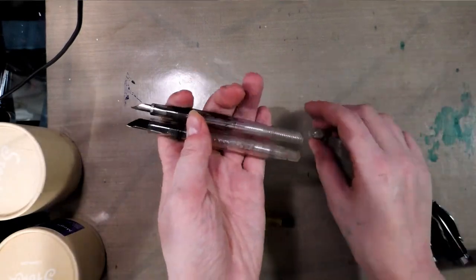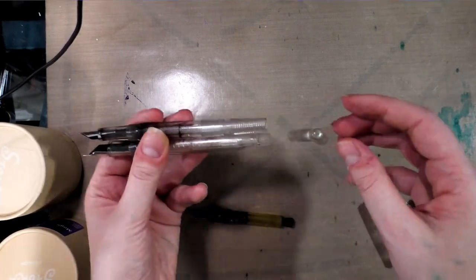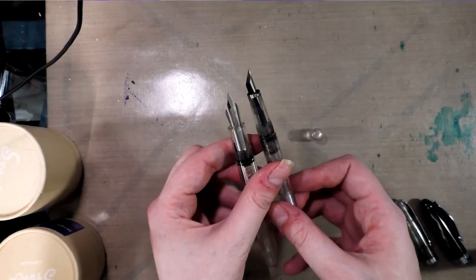As you can see, they're almost the same length and actually looking at them, the Flex is only a slight bit smaller than the Conrad.